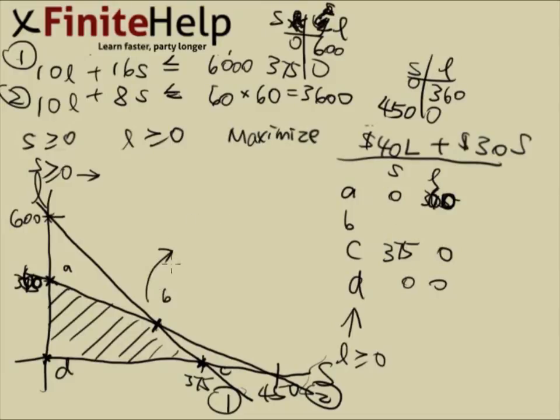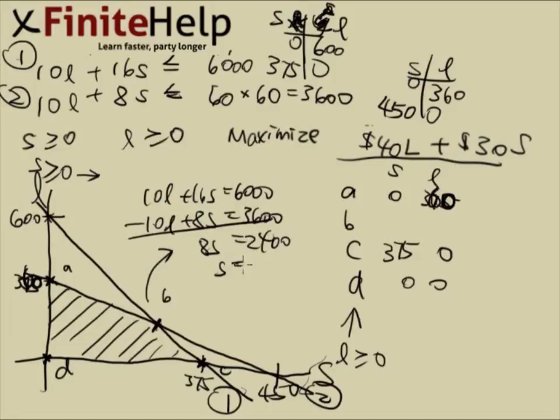Let's go ahead and calculate point B. Point B is the intersection of line 1 and line 2. We just have to put the two equations together. And here we can ignore the sign when we're calculating the intersection. I'm going to subtract the equations. We have left with 8S equals 2400. So S here is equal to 300. If S is 300, this is 2400. I'm going to subtract that as 1200, so that makes L 120. I did that pretty fast, but everyone should know how to do that. So S is 300 and L is 120 for point B.